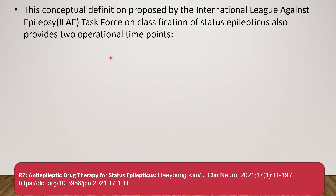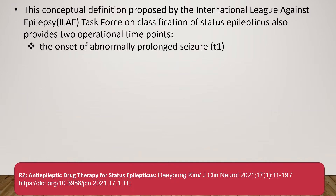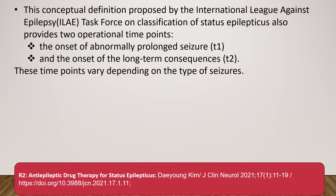Based on these principles, the International League Against Epilepsy Task Force on Classification of Status Epilepticus provides two operational time points. T1 is the onset of abnormally prolonged seizures, and T2 is the onset of long-term consequences. These time points vary depending on the type of seizures. We should start intervening at T1 and must achieve control by T2.